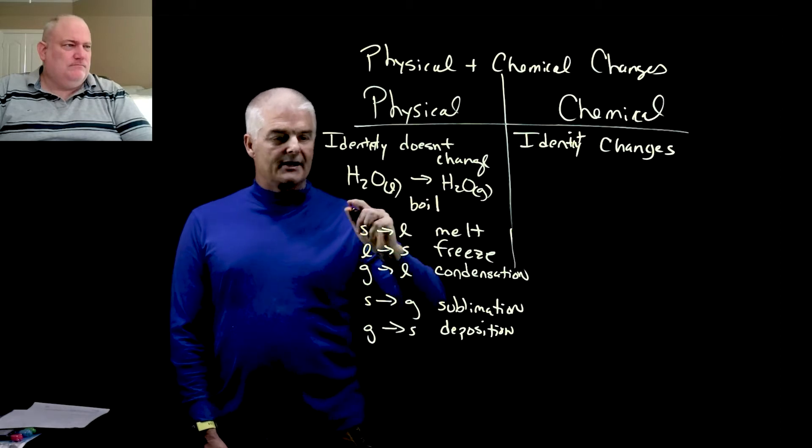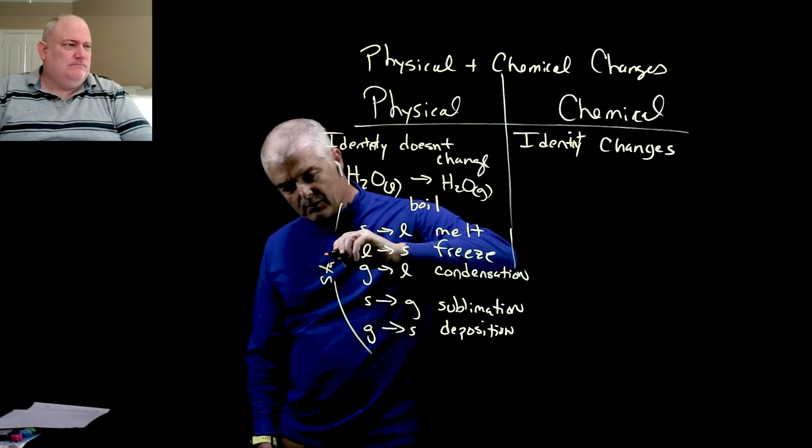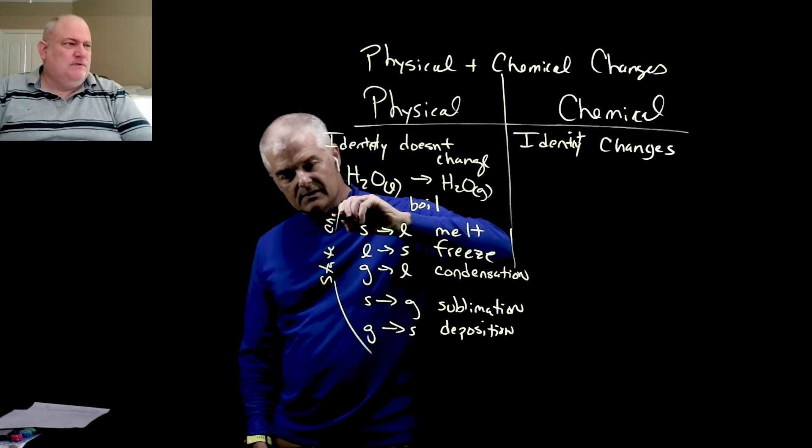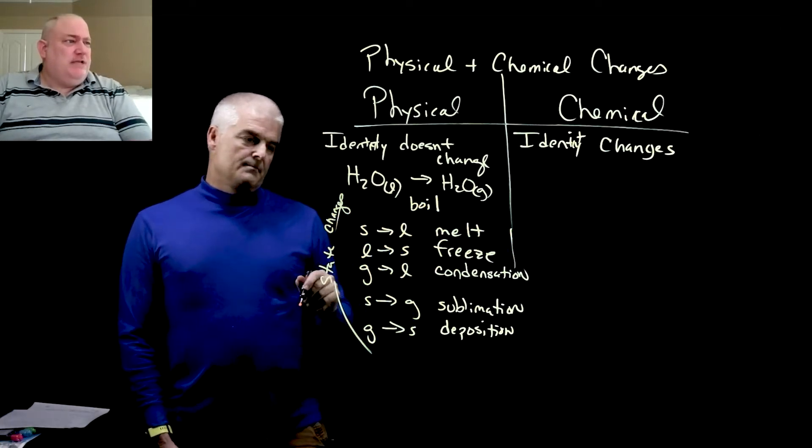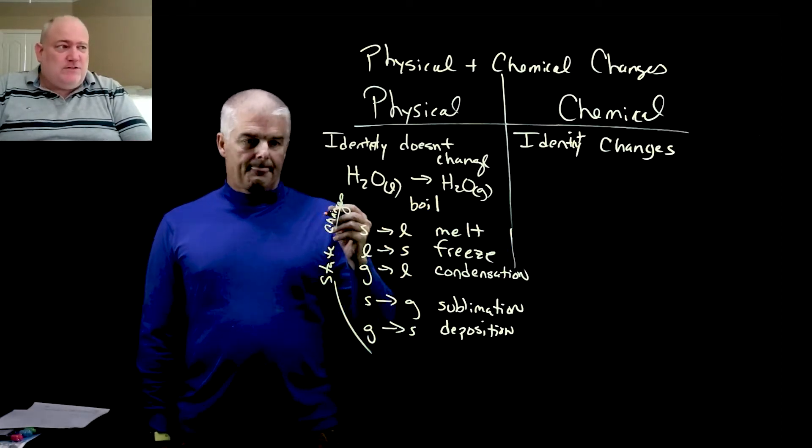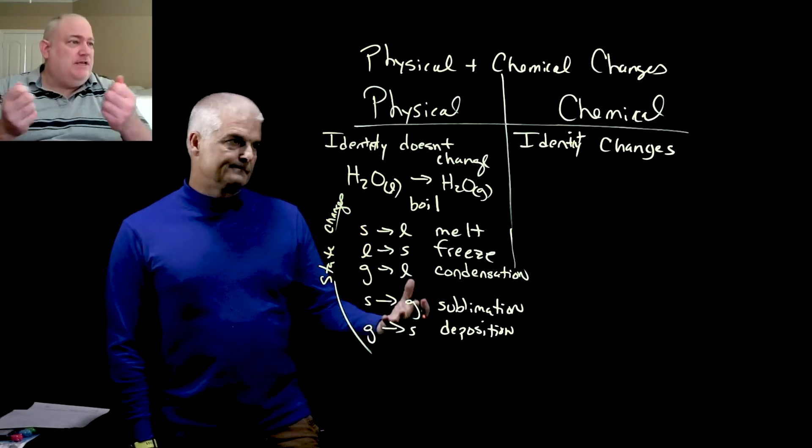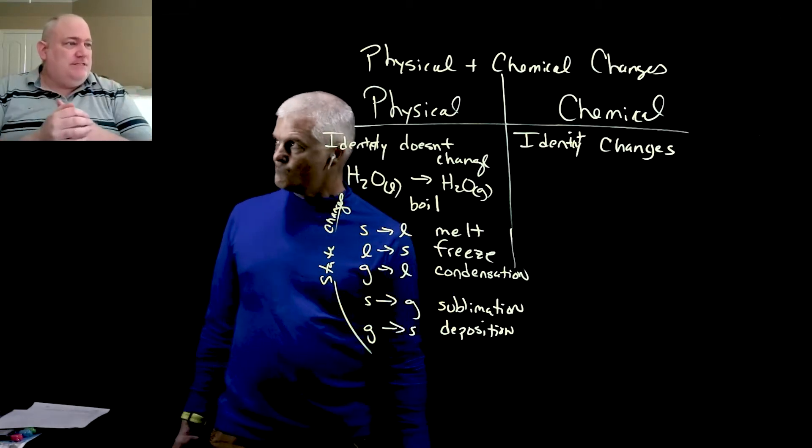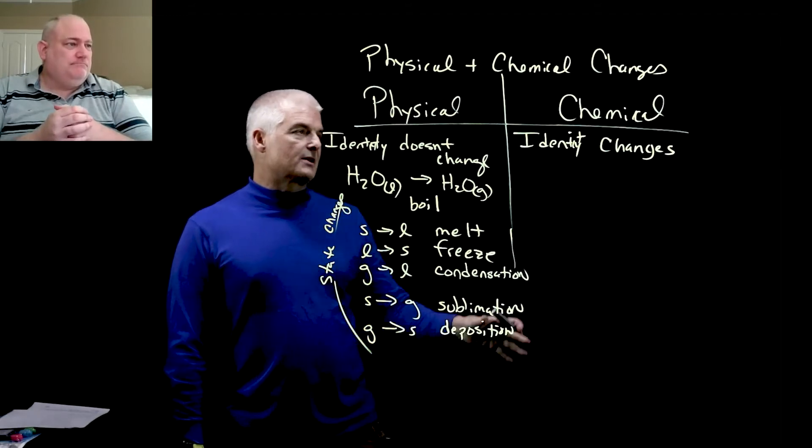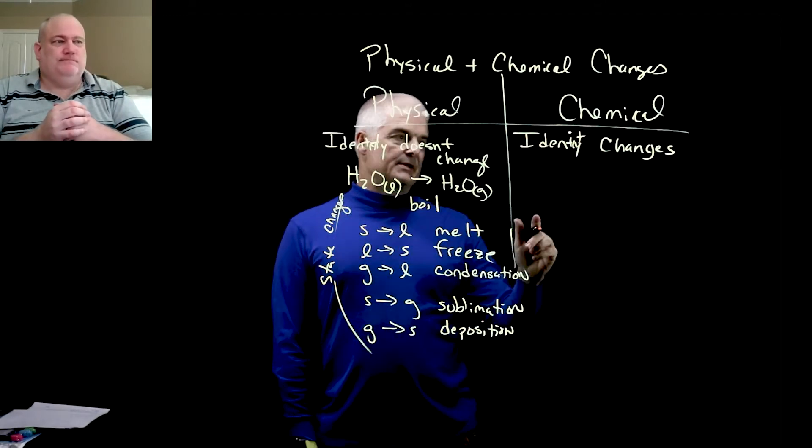A good example of sublimation is if you ever played around with dry ice. Dry ice, when you put it on the table, is going from solid carbon dioxide to gaseous carbon dioxide. Now those are physical changes. There are other ones that are not state changes. Are there other ones? Of course. Anytime you make a change to something and the identity doesn't change, you have a physical change. If you take a piece of paper and cut it, or if you bend something, any of these things—bending, cutting—those kinds of things, right?